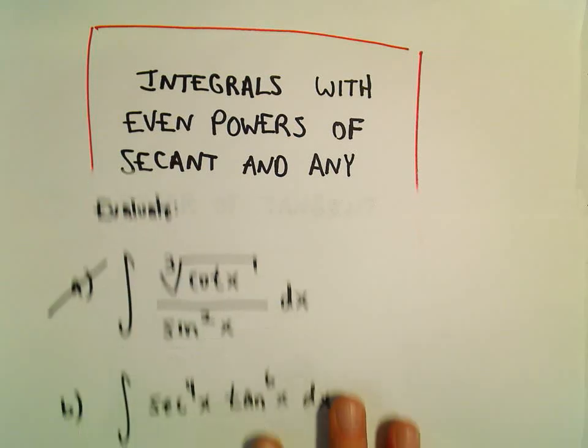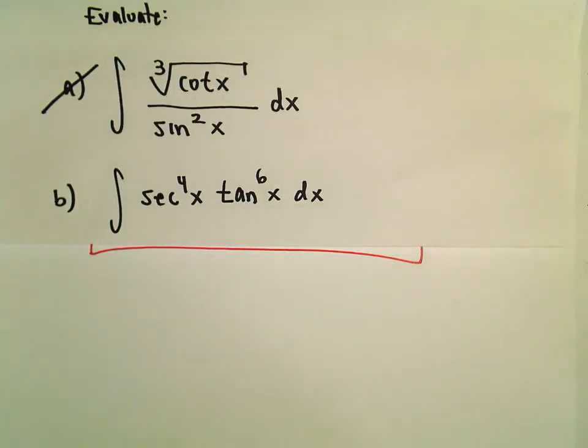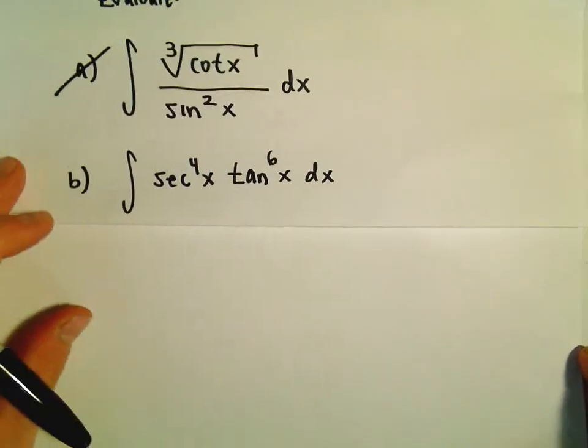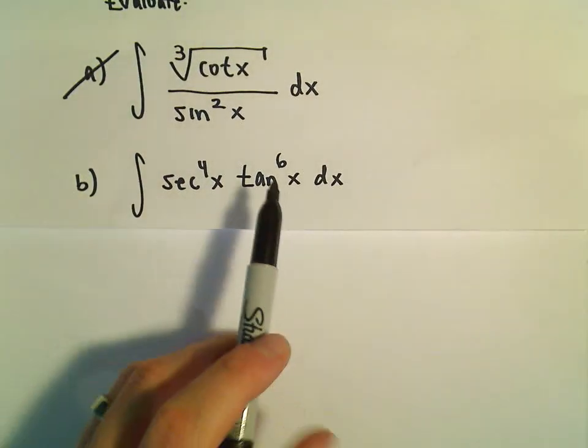Okay, here we're going to do another example of an integral with an even power of secant. And the trick on these is we can make a u-substitution work.